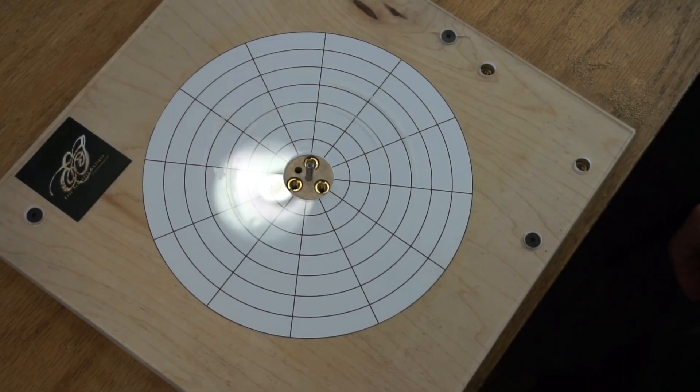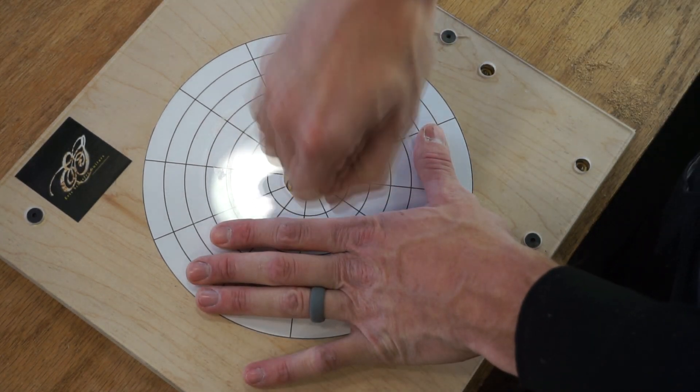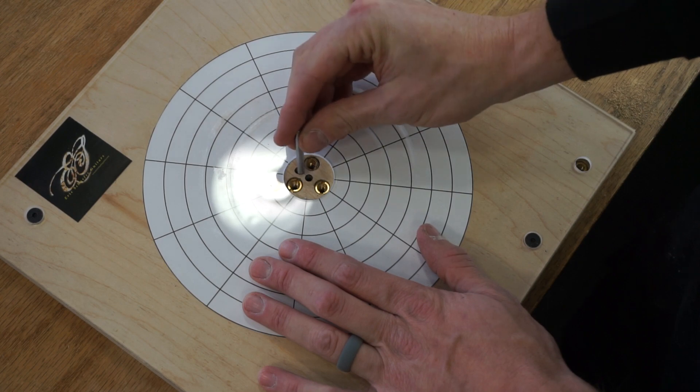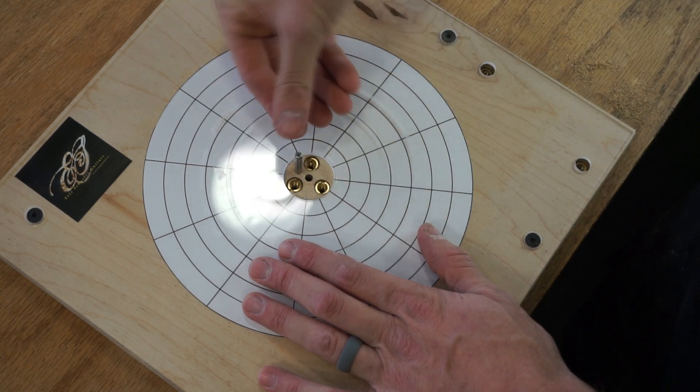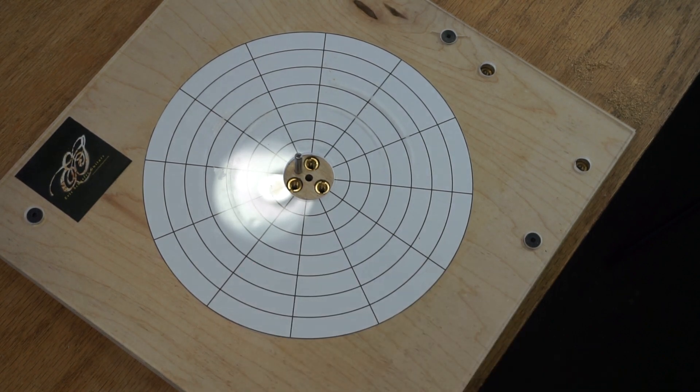The first thing I do when I know that I'll be adding an offset to my rosette is pull the 3/16ths of an inch pin out of the center pinhole and place it in the offset pinhole. When you're routing the rosette, the outside cut is always first, so it makes sense to start with the pin in the offset location.